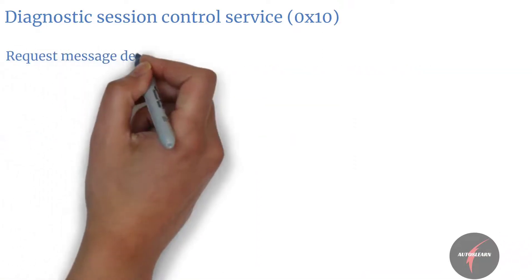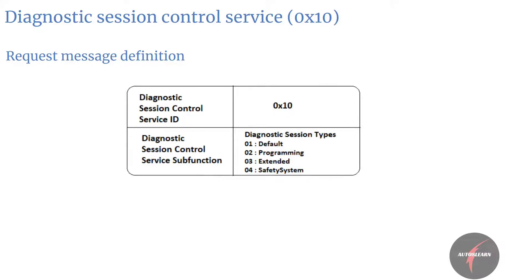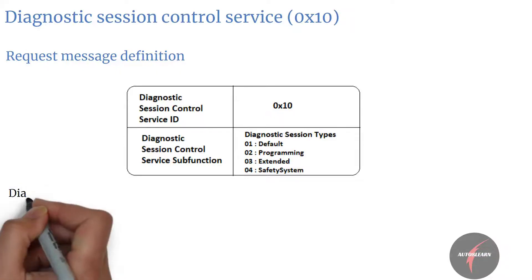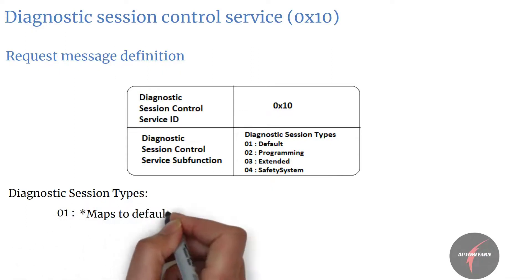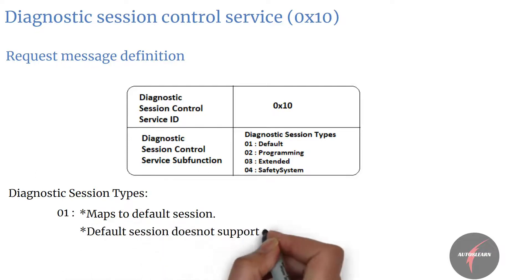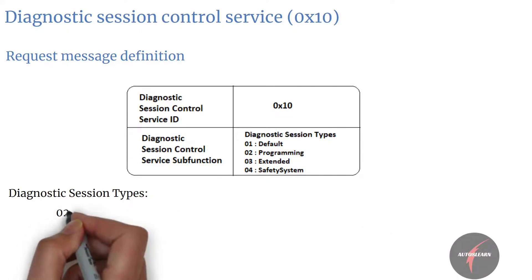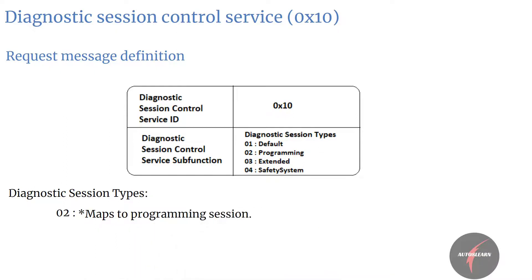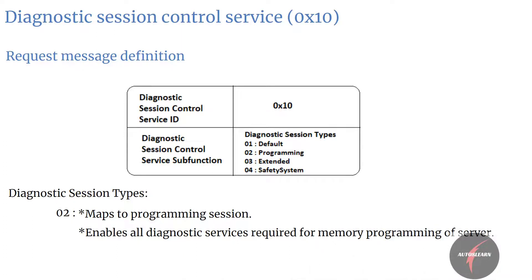Let's now look into the request message definition. In the request we have two parameters: Diagnostic Session Control SID mapped to value 0x10, and sub-function mapped to diagnostic session types. The diagnostic session types that can be sent on the sub-function parameter are as follows. Value 0x01 maps to the default session — the default session doesn't support any diagnostic application timeout handling and no tester present service is necessary to keep the session active. Value 0x02 maps to the programming session, which enables all the diagnostic services required to support memory programming of the server.